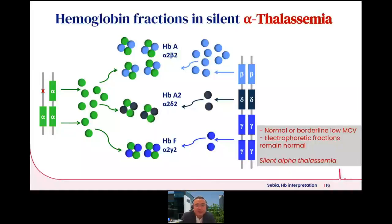In alpha thalassemia, there is a reduction in alpha genes. Because there are more alpha genes (four), there is a greater buffer for gene loss. In cases of reduced alpha genes, pairing with other globin genes is reduced, but this may not be a great issue. In mild or silent forms, MCVmay be normal or borderline low, and electrophoretic fractions may remain normal.